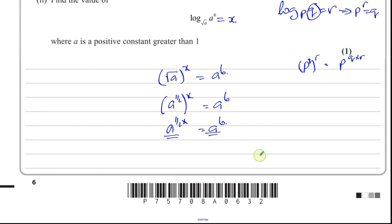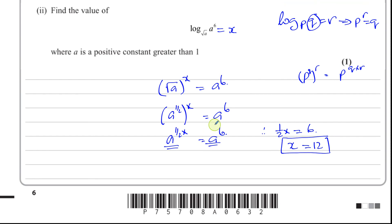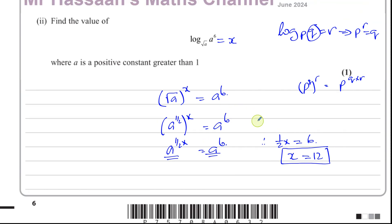The bases are both the same, and a is a positive constant greater than 1, so we can equate the powers: x over 2 equals 6, therefore x equals 12. When x equals 12, that is the value of log base root a of a to the power of 6. The value is 12.